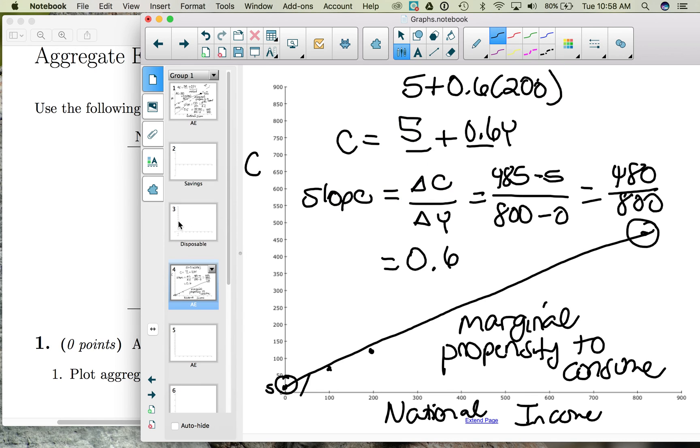And we could figure out how much total consumption spending is. 5 of it would be autonomous. The rest, the 0.6 times 200, is the induced portion. The consumption spending that depends on the fact that we have $200 of income.